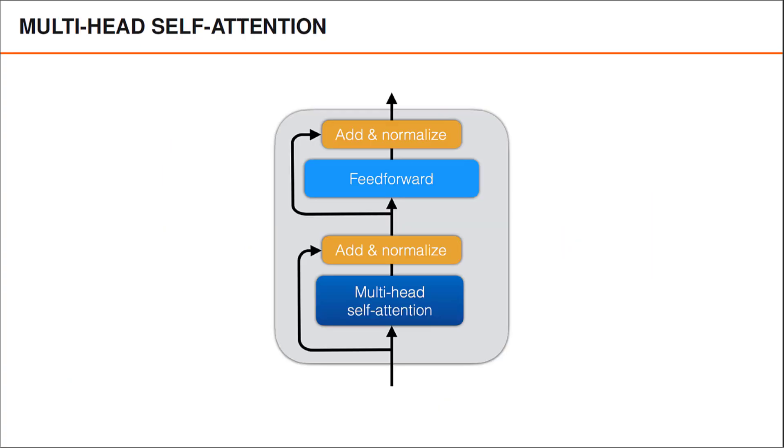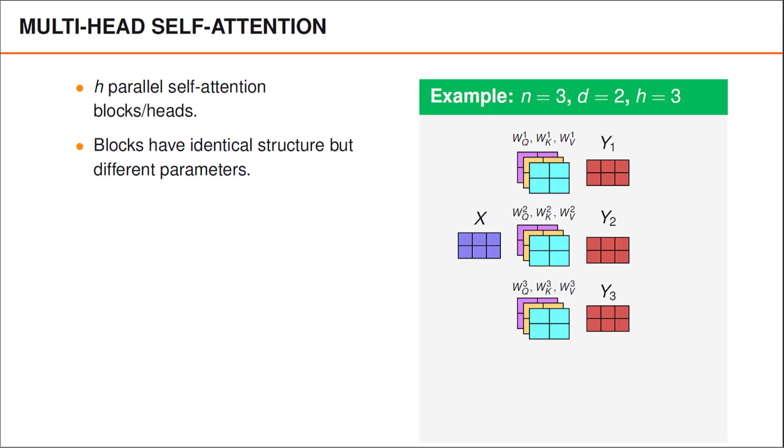Let us now look at multi-head self-attention, which is the main novelty and the first layer in the encoder blocks. Multi-head self-attention, often referred to as multi-head attention, consists of h parallel self-attention blocks, or heads as they are also called. For example, all of these heads perform self-attention as described in the previous video, and they all have the same structure but different parameters, which enables them to look for different things when performing attention.